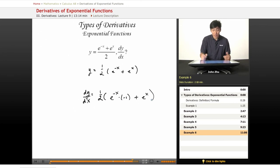So then we simplify this a little bit, get rid of some parentheses, 1 half times negative e to the negative x plus e to the x.